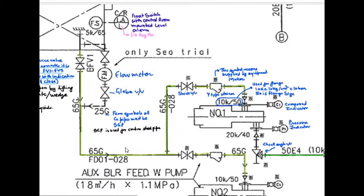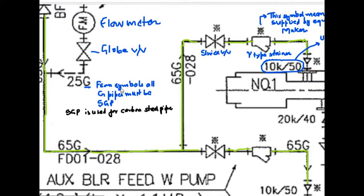Now, one thing is this G means from the symbols given before this drawing, G pipes must be SGP. SGP is used for carbon steel pipes. Wherever you saw G with the piping symbol, it means SGP pipes, carbon steel pipes are used.